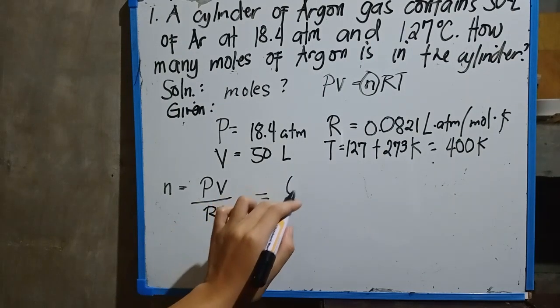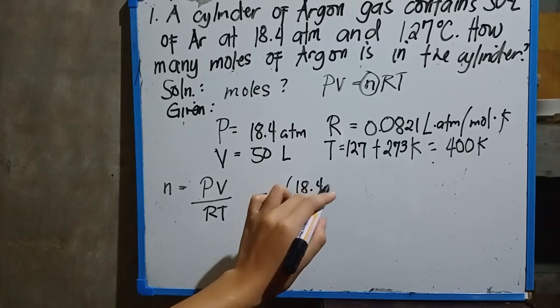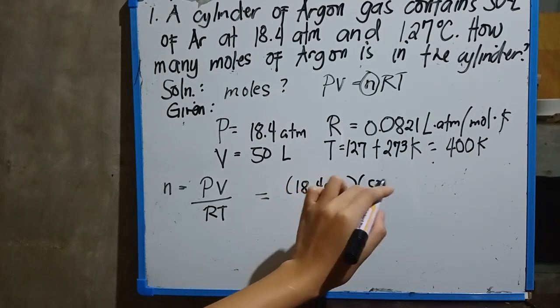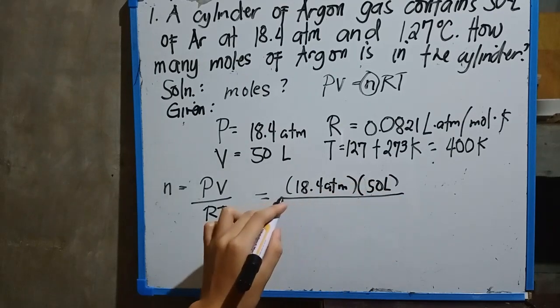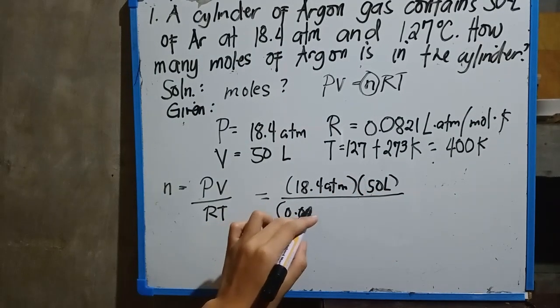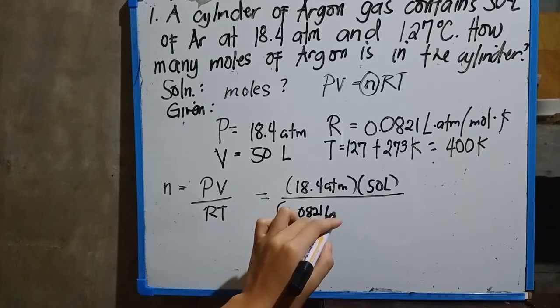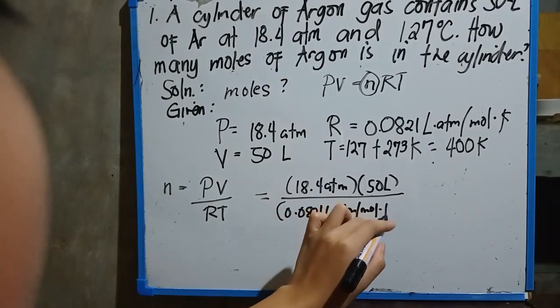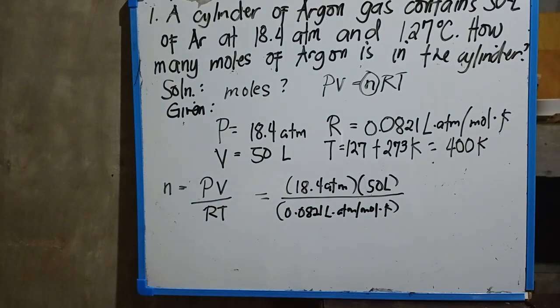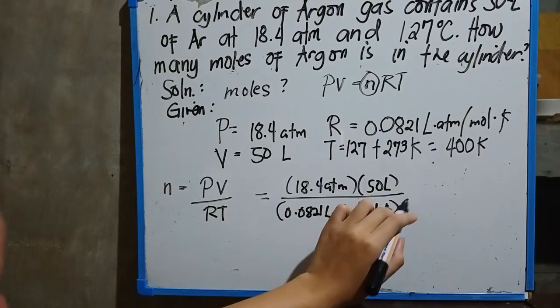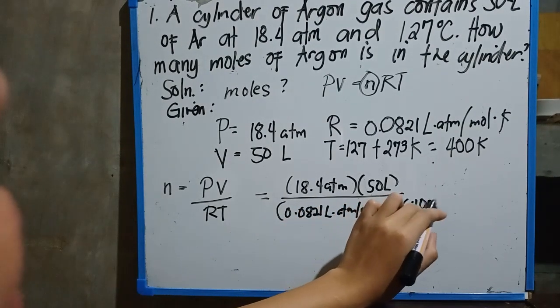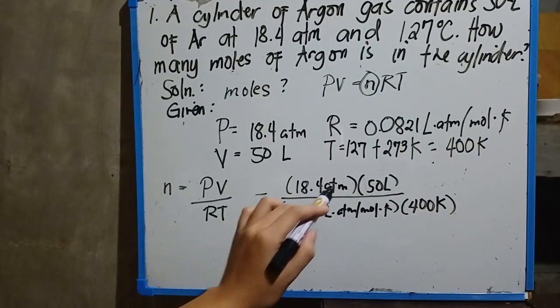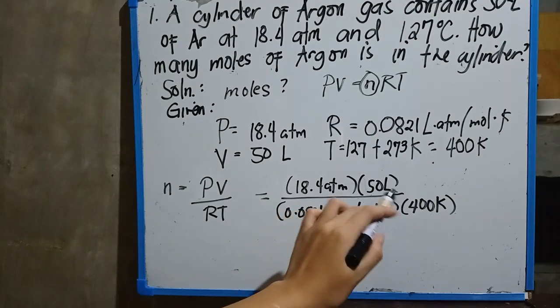So 18.4 atm times 50 liter over 0.0821 liter·atm per mole·kelvin, multiplied to 400 kelvin. We need to cancel first the same units, so we have the liter, the atmospheric pressure, and also the kelvin.